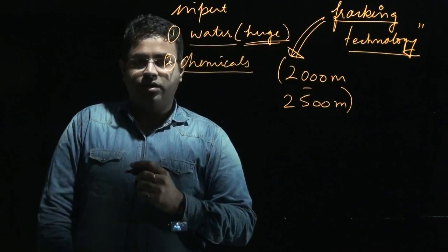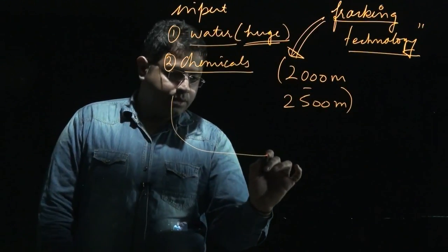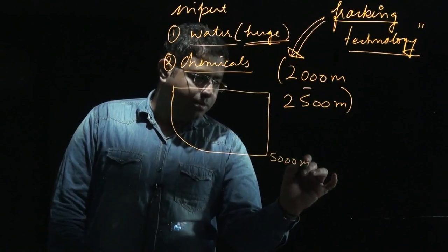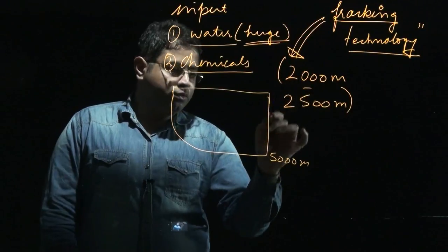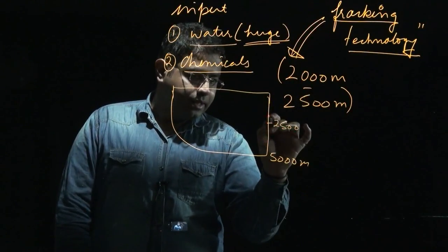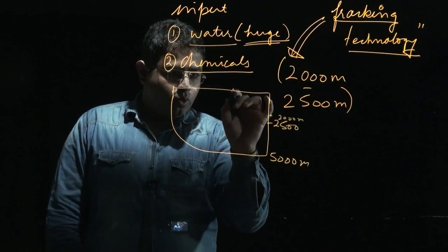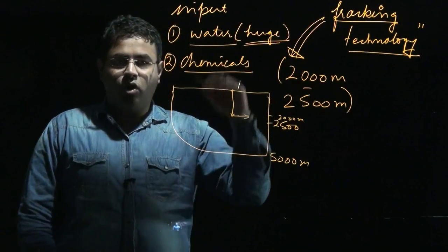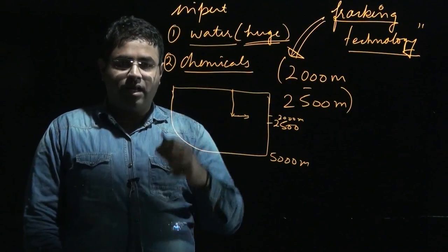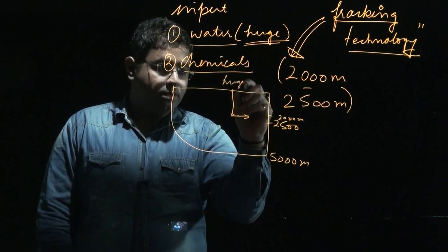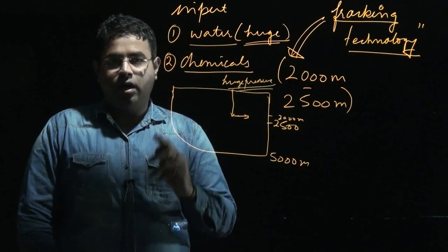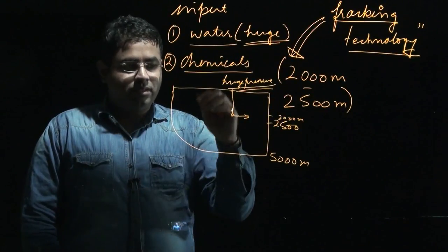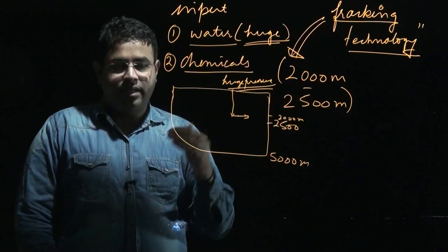Now let us understand how this fracking technology works. Let us suppose this is the lithosphere — the rocks — and at a depth of maybe up to 5,000 meters we can find shale gas and oil. At the depth of around 2,000 to 2,500 meters, we need to do vertical drilling first, and then we need to do horizontal drilling. When the drilling is done, water under huge pressure along with chemicals is pumped into this drill, and this actually helps in extracting the oil and gas out of it.